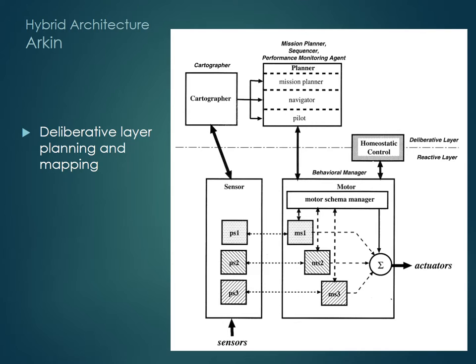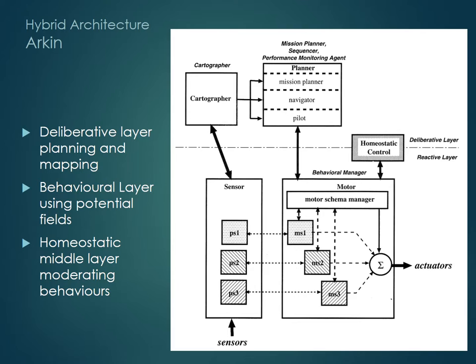In this example, higher-level deliberative functions include mapping, navigation, mission planning and sequencing. The reactive layer still has direct sensor-to-actuator links for fast response, with behaviours running in parallel and merged together by potential fields. It's only if the reactive layer fails to progress that an upwards call is made to the deliberative layer for emergency planning. An additional unit here is the homeostatic layer that straddles both areas, and is responsible for moderating reactive behaviours in response to mission requirements.